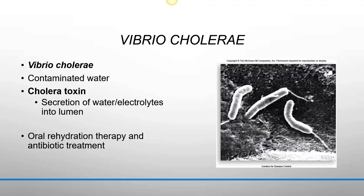Treatment involves oral rehydration therapy and antibiotics. With oral rehydration therapy, a tube is passed up the nose into the stomach and fluids are pumped into the intestine, flushing the toxin out and creating back-pressure of water returning to the tissues. IV fluids alone are not enough — you need oral rehydration therapy, antibiotics, and IV fluids together.